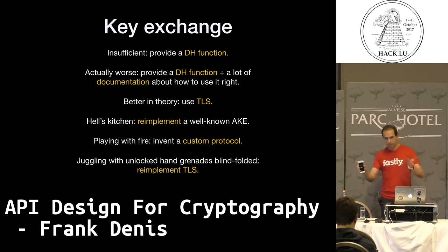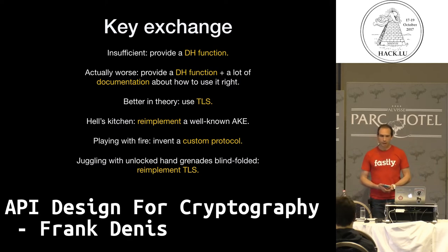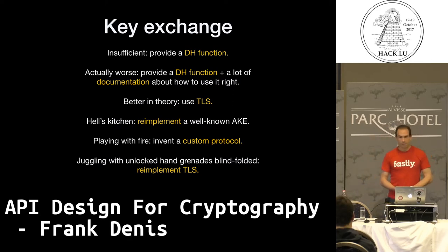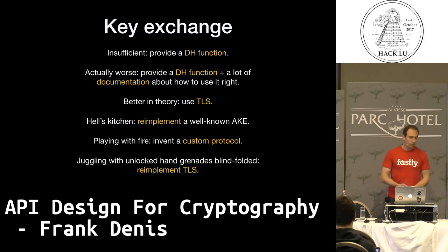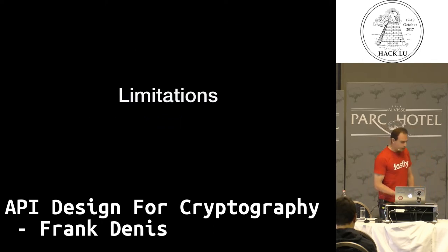Key exchange: if you want different parties to communicate, they have to agree on secret keys. Libraries either provide something very simple like just a Diffie-Hellman function — usually not enough — or they provide a Diffie-Hellman function and tell you what to do with it, requiring you to re-implement everything, which can be even worse. At that point it's probably safer to just use TLS for key exchange, or worse, your library documentation recommends people re-implement everything including TLS — which would be terrible.